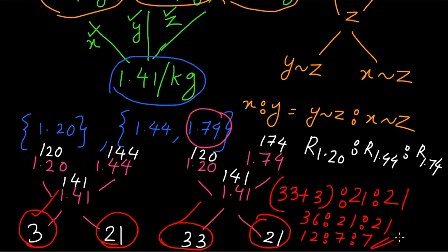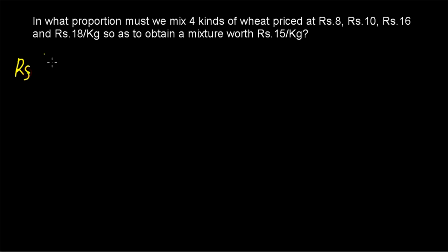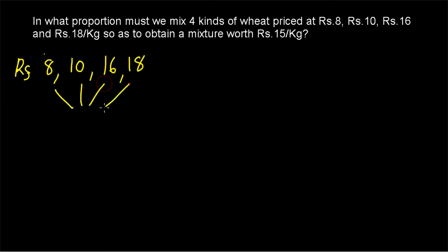Now let's see another question of the same kind. In what proportion must we mix 4 kinds of wheat priced at Rs 8, Rs 10, Rs 16, and Rs 18 per kg so as to obtain a mixture worth Rs 15 per kg? Here 4 varieties of wheat are getting mixed — Rs 8, Rs 10, Rs 16, and Rs 18 per kg — and the mixture is worth Rs 15 per kg.